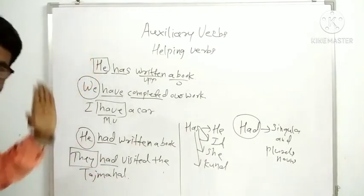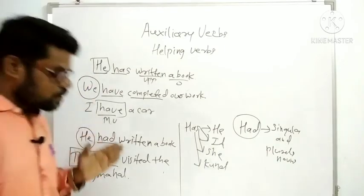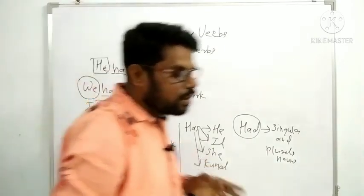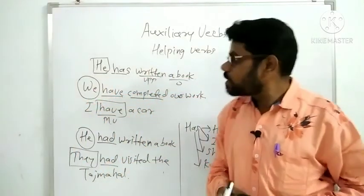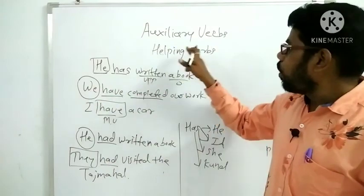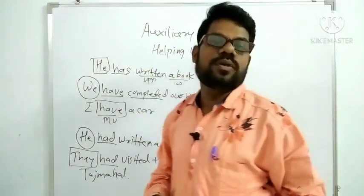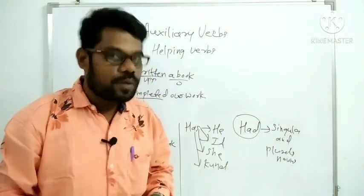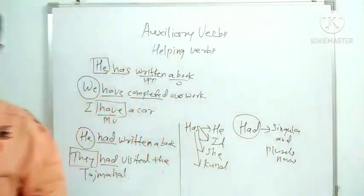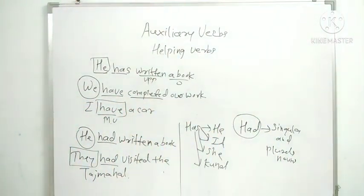So students, all of these — do/does/did, am/is/are/was/were, shall/will, and have/has/had — are the helping verbs or auxiliary verbs. I hope you all have understood it.